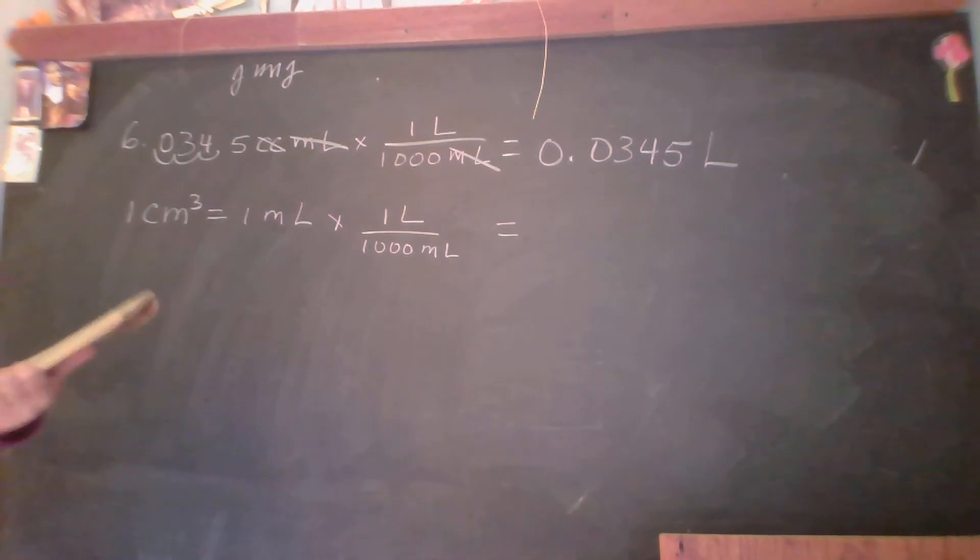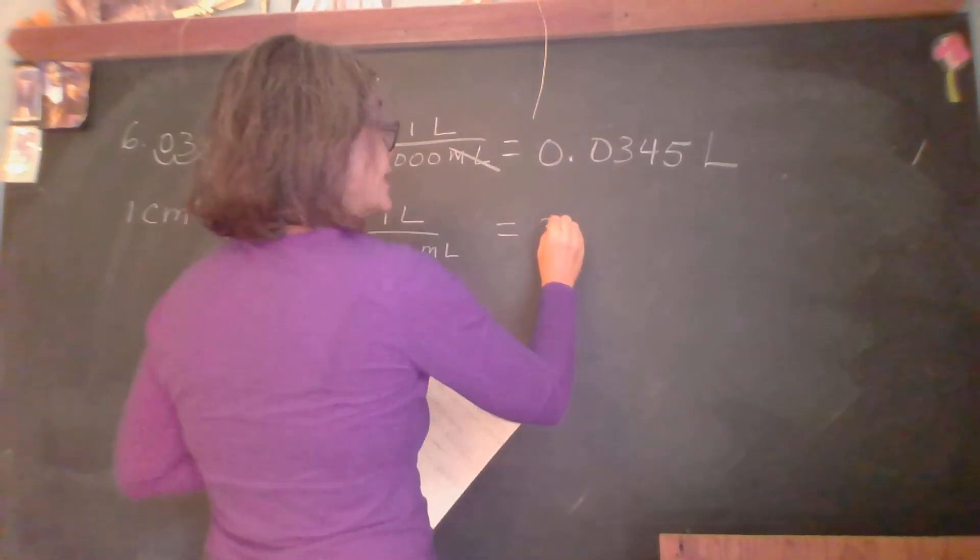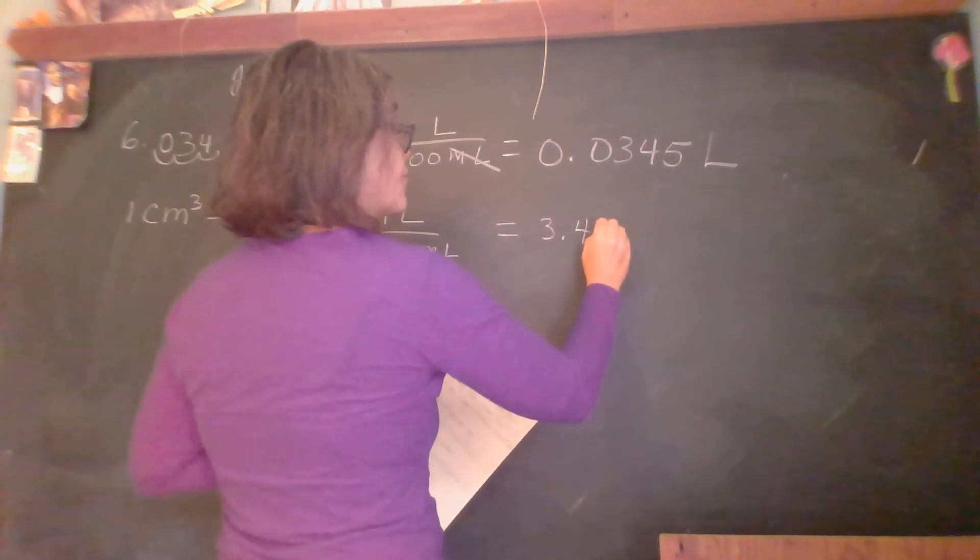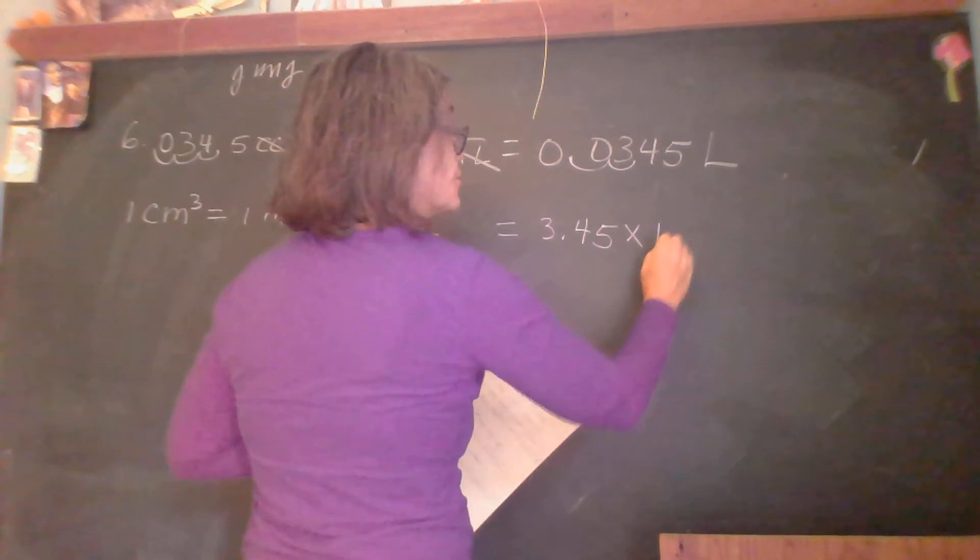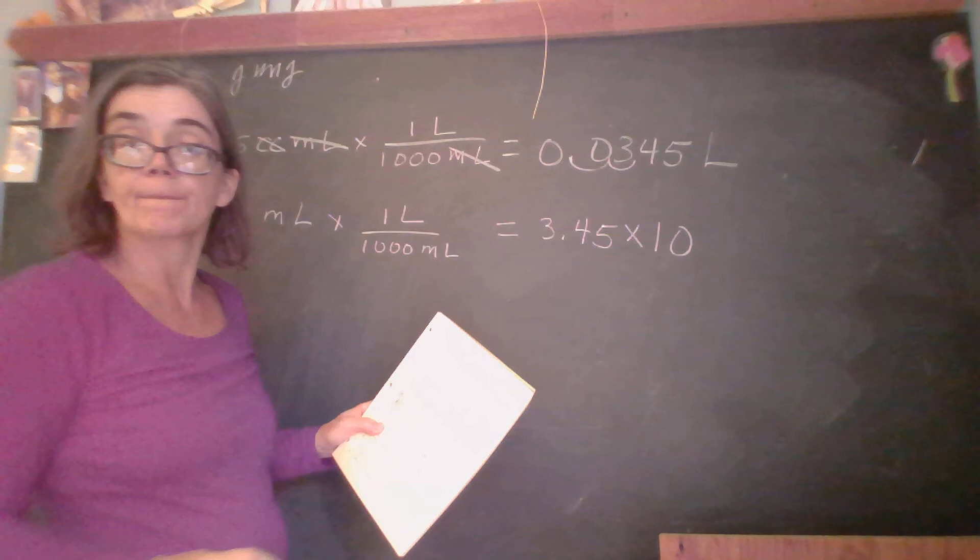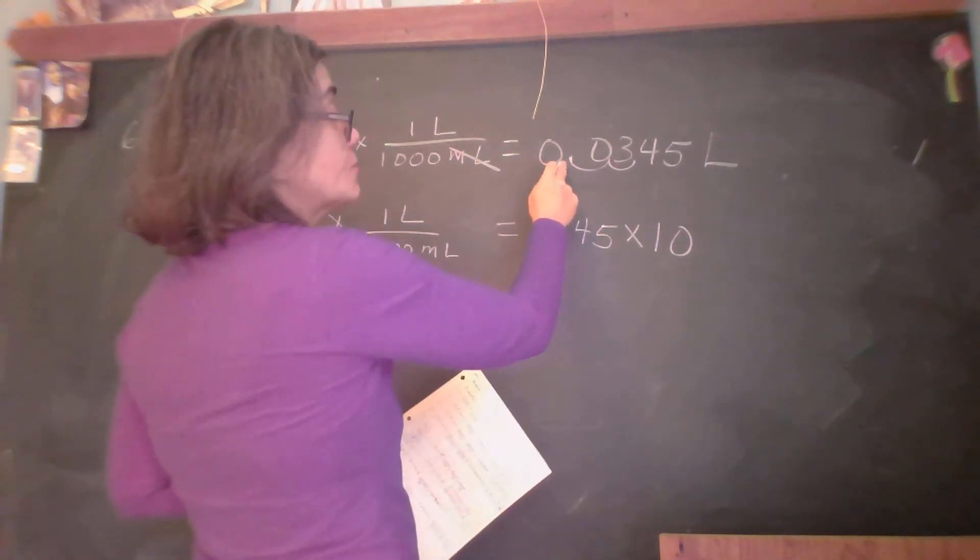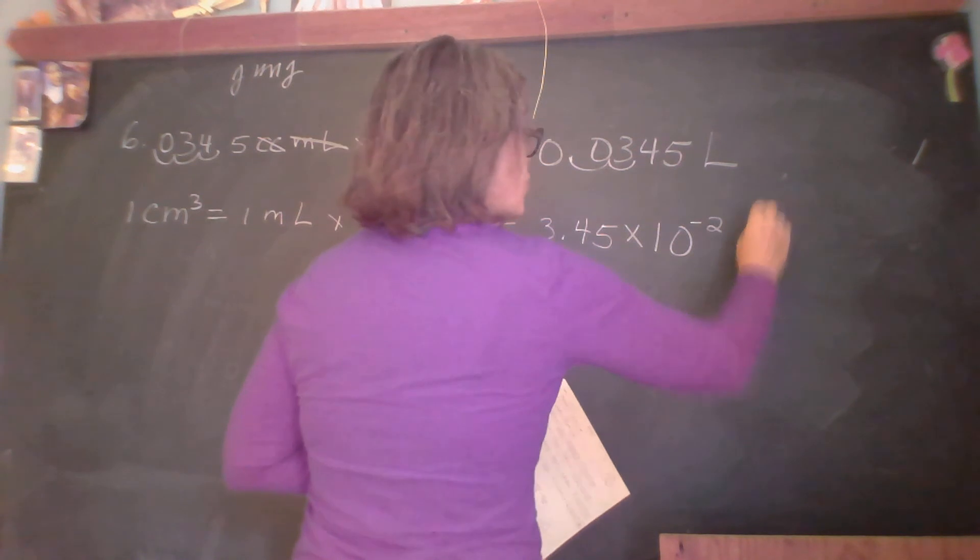Well, our original equation was given 34.5 cc, right? One, two, three. So we want three of those. So we're going to have 3.45 times 10 to the negative three. No. Oh yeah, you have to do the loopy-doop or you're going to screw it up. But I put it at the four. So that was my mistake. Negative two. Liters.